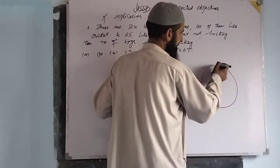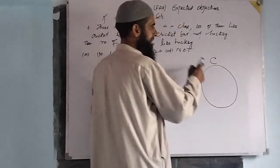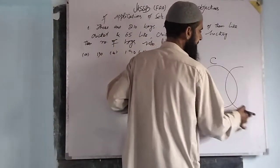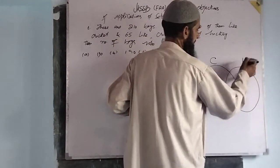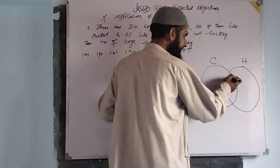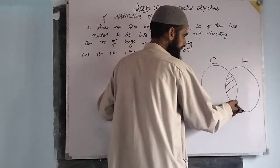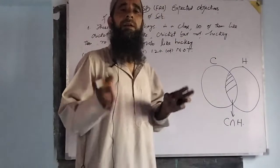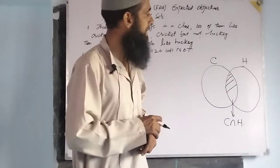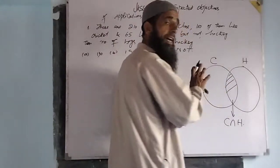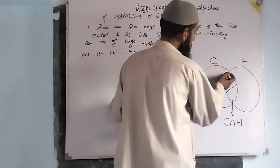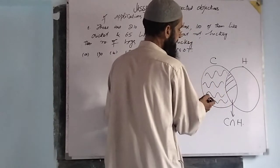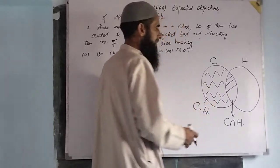Taking this as set C — C be the set of boys who like cricket. Next, H be the set of boys who like hockey. Here are the elements in C intersection H — the boys who like both cricket and hockey. This region is C minus H, which represents cricket but not hockey.